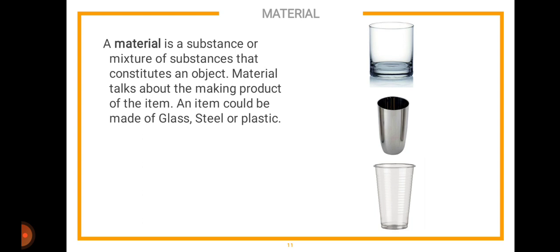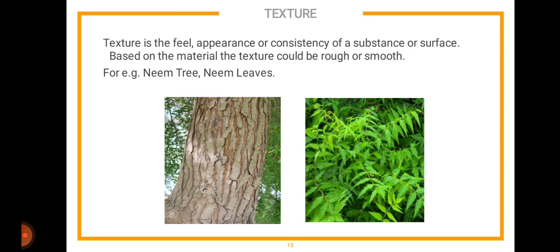Next up, we have material. A material is a substance or mixture of substances that constitutes an object. Material talks about what an item is made of — it could be glass, plastic, or steel. For example, if you see three diagrams: a glass cup, a steel cup, and a plastic cup — they are all cups. So if you want to drink water, you could use any of these.